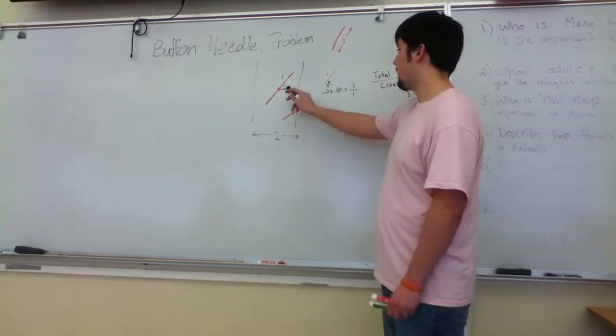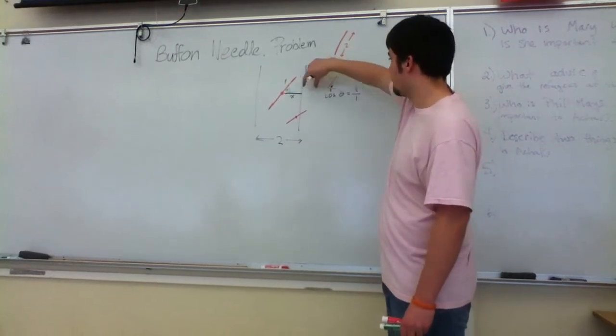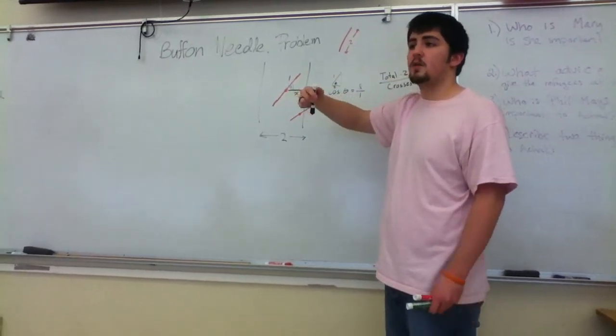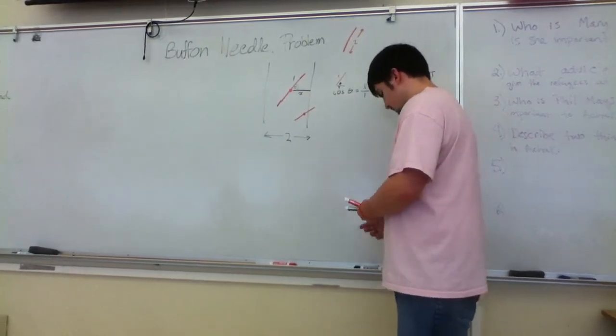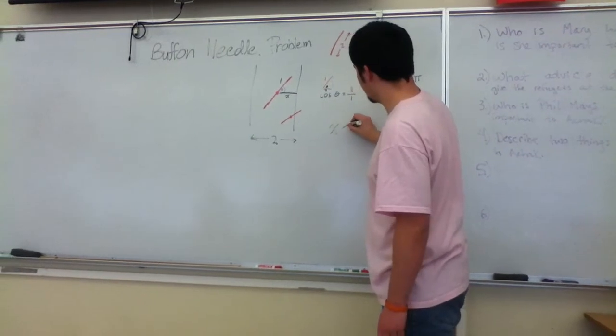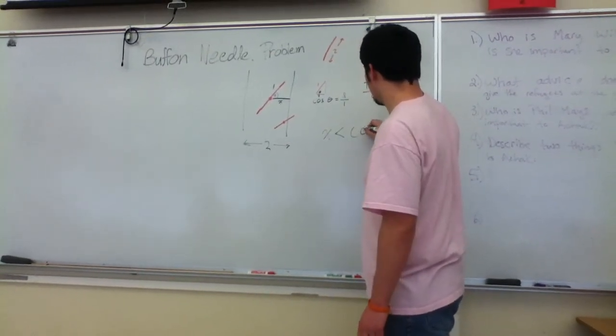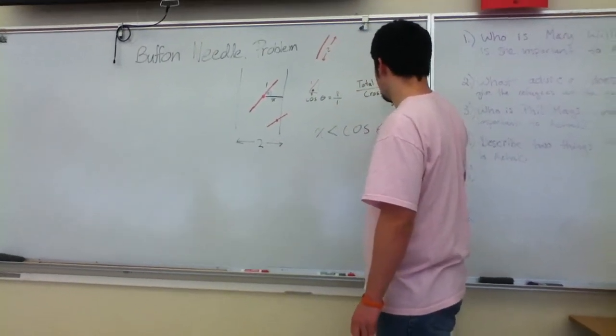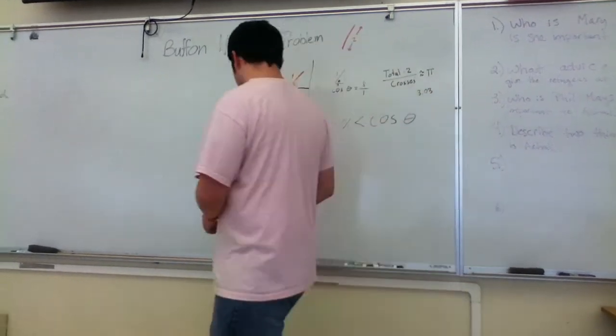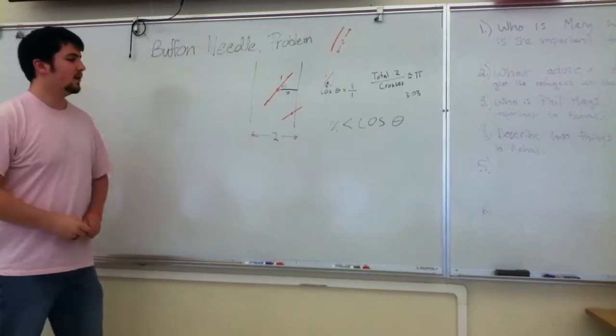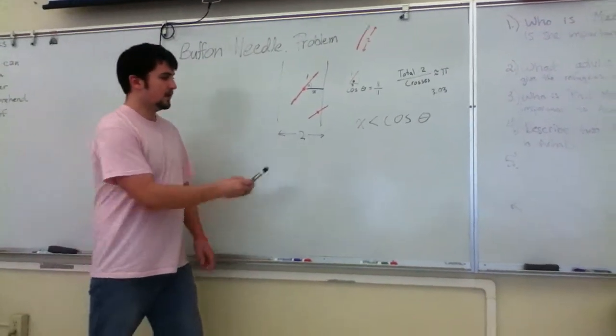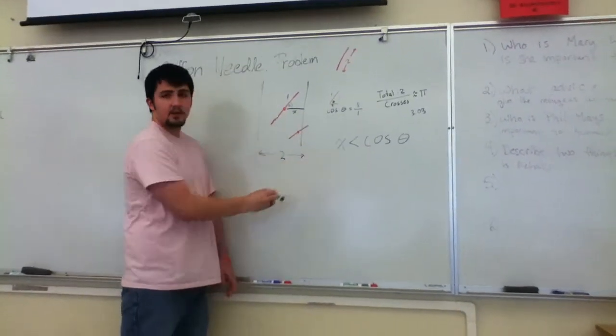The idea is that if it sticks out and this distance is greater than x, then it'll cross the line. So if you can say that x is less than l sine theta, then it crosses.